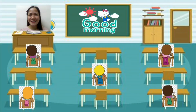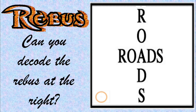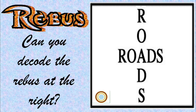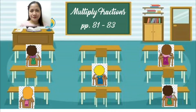Good morning, Grade 6. Welcome back to our math class. Can you decode the rebus at the right? I will give you 5 seconds. Go! And the answer is crossroad. Now get your math book. Open on pages 81 to 83. Multiply fractions.